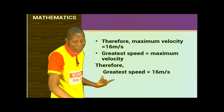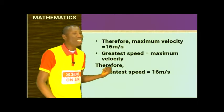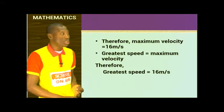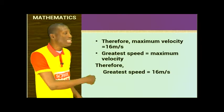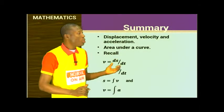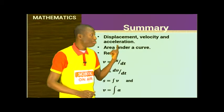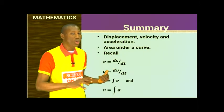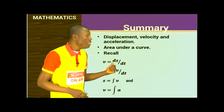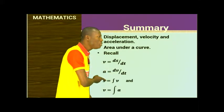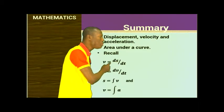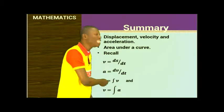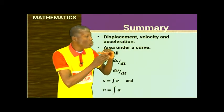The maximum velocity is 16 m/s. Regarding greatest speed versus velocity: velocity is a vector quantity and speed is a scalar quantity. Greatest speed equals the magnitude of maximum velocity, so greatest speed equals 16 m/s. To summarize: V equals dS/dt means differentiating displacement gives velocity. Differentiating velocity gives acceleration. Conversely, integrating acceleration gives velocity, and integrating velocity gives displacement.